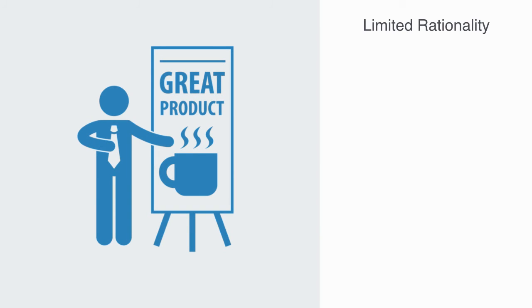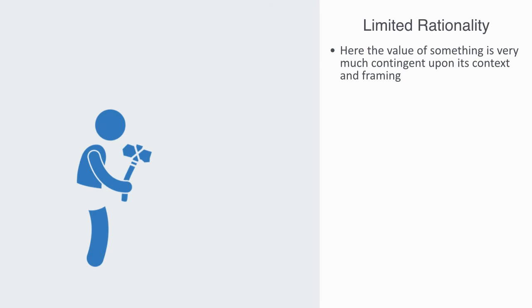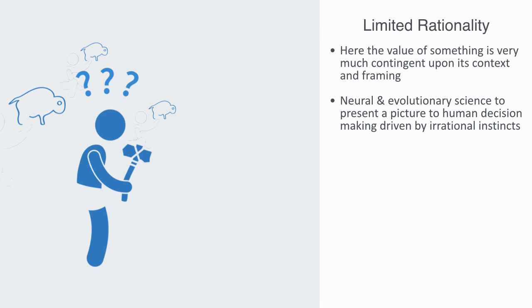The model that behavioral economics presents us with, and what comes out of the data, is of course a very different picture. Here, the value of something is very much contingent upon its context and framing. From this perspective, human beings have very limited capabilities for logical, deliberative reasoning. Behavioral economics draws upon neural science and evolutionary biology to present a picture of human decision-making that is driven much more by irrational instincts, primordial motives such as hope, fear and greed, that all totally bypass any kind of abstract, isolated,